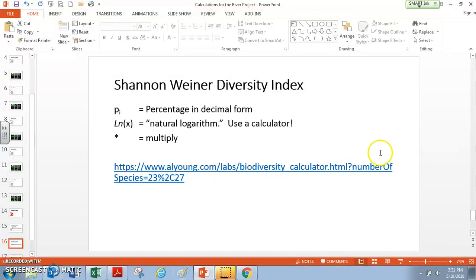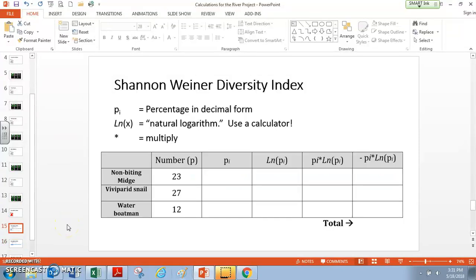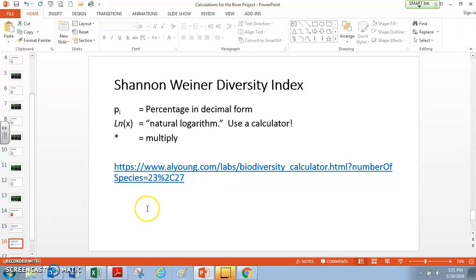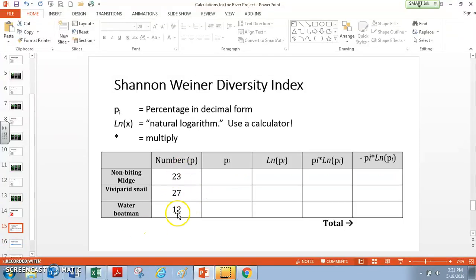Okay, so this is that website. I'll also send this to you and make this available. It's going to save you a lot of time, because instead of having to set up this whole big complicated table, we just take our numbers, plug them in, and I'll show you which one we want to look at that gives us our biodiversity Shannon-Weiner. So we still have to know these numbers, 23, 27, and 12, but I'll show you how to use this website.